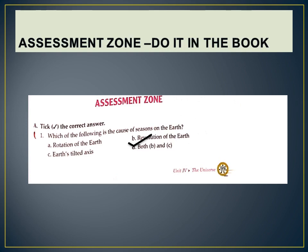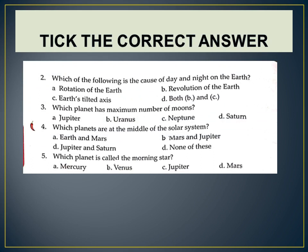Page number 100. Question 2: Which of the following is the cause of day and night on the earth? Options: (a) rotation of the earth, (b) revolution of the earth, (c) earth's tilted axis, (d) both b and c. Correct answer: rotation of the earth. Question 3: Which planet has the maximum number of moons? Answer: Jupiter. Question 4: Which planets are at the middle of the solar system? Answer: Mars and Jupiter. Question 5: Which planet is called the morning star? Answer: Venus.